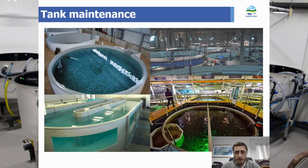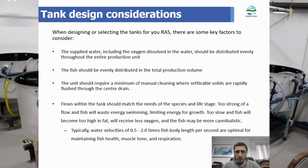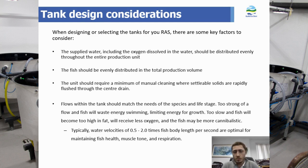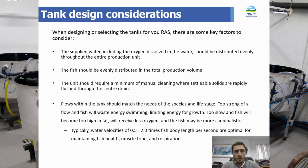First off, we'll be looking at tank maintenance. I'll start going over some of the design management considerations we take into account when selecting or designing our tanks for the systems. Some important things that we want to consider and aim for are homogenous water quality, so even distribution of oxygenation and flows, even distribution of the fish throughout the water. You don't want issues with fish clumping in a corner or at the base of your tank. It needs to suit the species. You also want a low maintenance design, and I'll go into this more later on, but this is to do with a self-cleaning function. And as mentioned, the flow rates will need to match the species and life stage of the fish you are culturing.